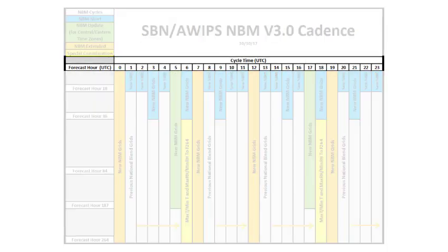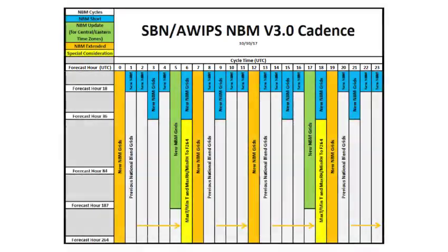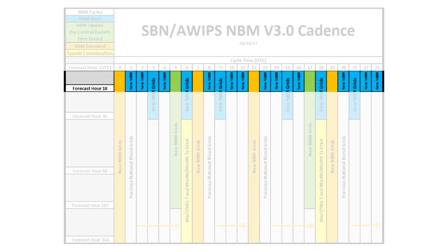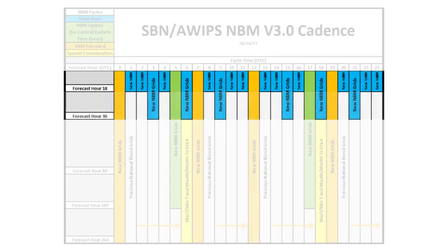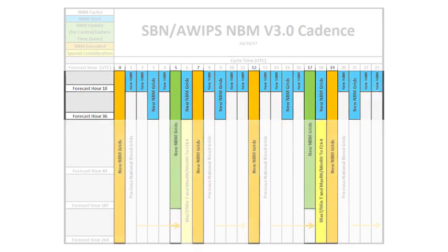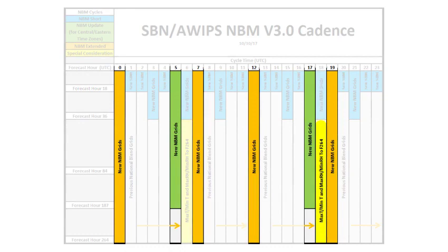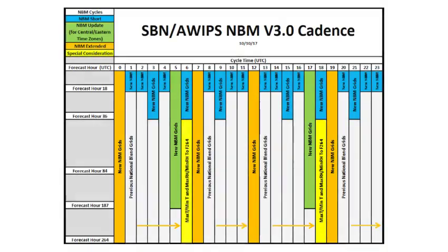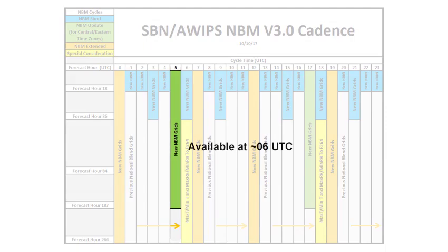The NBM is updated hourly rather than twice per day. Zero to 18 hour forecasts are updated hourly, 19 through 36 hour forecasts at least every three hours, and longer forecasts at least four times per day. Under the time of day paradigm, the NBM provides hourly forecast updates available about an hour after blending starts. For example, the 5 UTC NBM cycle is available at about 6 UTC.